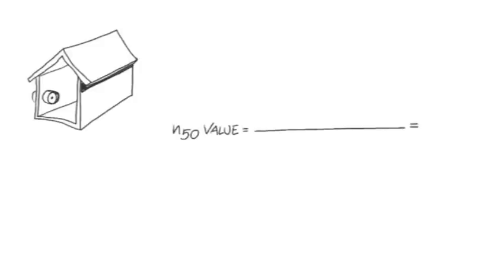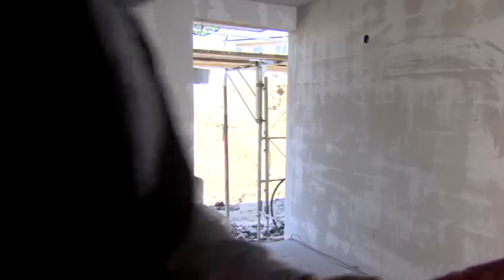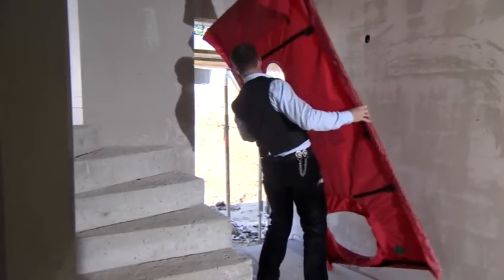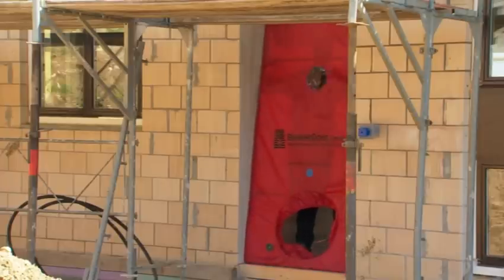The smaller the N50 value, the tighter the building. The most important information for the measurement is how much air is in the building. Our model house has an indoor air volume of 600 cubic metres. We include this value into the calculation formula: 600 cubic metres heated indoor air volume. For the measurement, a frame covered with an airtight membrane is fitted into the front door frame. All other openings of the building are closed.